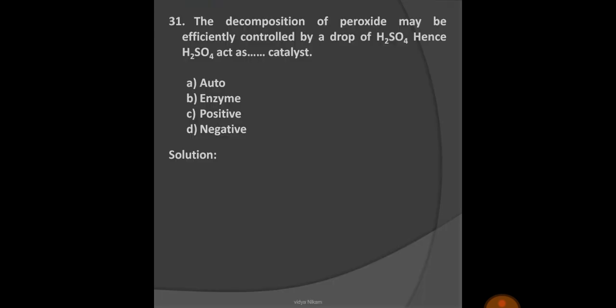Okay, so let us start from question number 31. The decomposition of hydrogen peroxide may be efficiently controlled by a drop of H2SO4. Hence H2SO4 acts as a catalyst. Option A: Auto, B: Enzyme, C: Positive, and D: Negative.